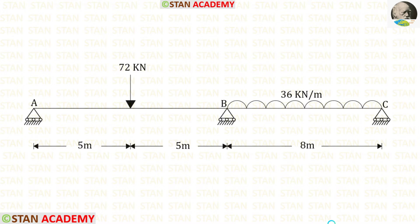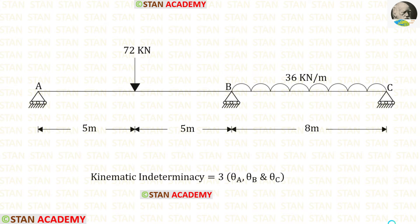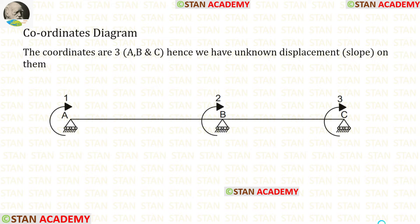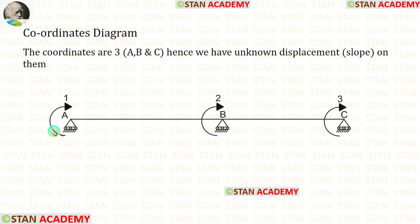In the stiffness matrix method for beams, we have to check the number of supports at which slope can occur. In this beam, at points A, B, and C we have roller supports, so slope will occur at all three points. The kinematic indeterminacy of the beam is 3. At point A we have theta A, at point B we have theta B, and at point C we have theta C. Now let us make the coordinates diagram. In this analysis there are three coordinates, at points A, B, and C, and they should be made in the clockwise direction.